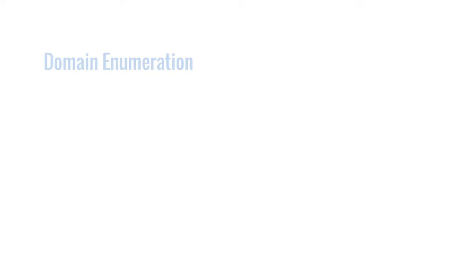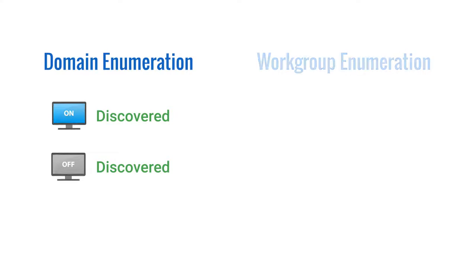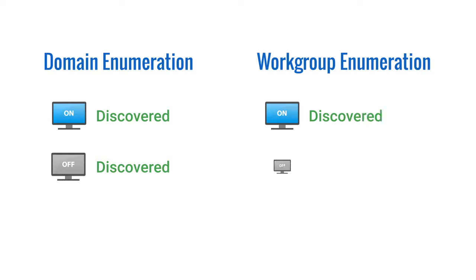If you enumerated a domain, you can see all domain computers in the network tree regardless of their state during the enumeration. Whereas if you choose to enumerate a workgroup, you can only see the computers that were turned on during the enumeration. This happens because the Windows networking infrastructure in a workgroup environment doesn't report the computers that have been turned off for about 30 minutes.